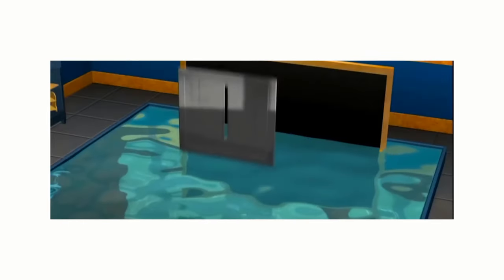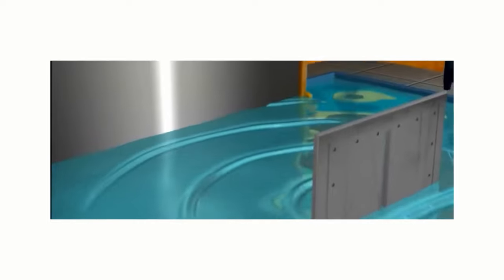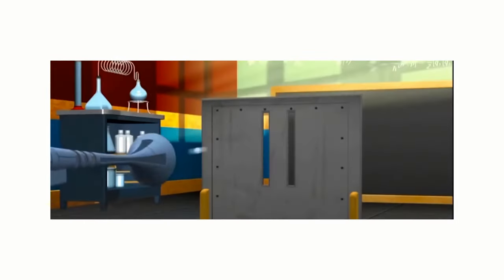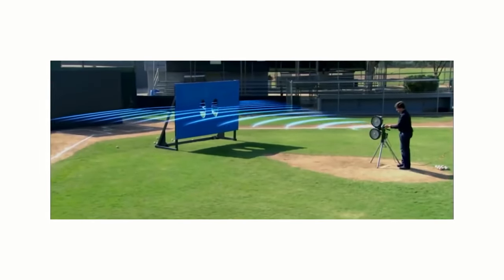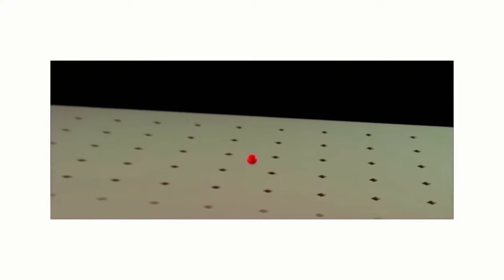The double-slit experiment is a fascinating example of the counterintuitive behavior of quantum particles. When the particles pass through the slits, they enter a state of superposition where they exist in a combination of both possible paths. Each particle has a wave function that describes the probability of finding the particle at any given position. The wave function is a complex mathematical function that can have positive and negative values, which can interfere with each other. The two waves from the two slits can interfere constructively, leading to bright fringes on the screen, or destructively, leading to dark fringes. The interference pattern is a manifestation of the wave-like behavior of matter. The concept of superposition is fundamental to quantum mechanics, implying that a quantum particle can exist in multiple states simultaneously — starkly contrasting classical mechanics, where objects have definite positions and momenta.